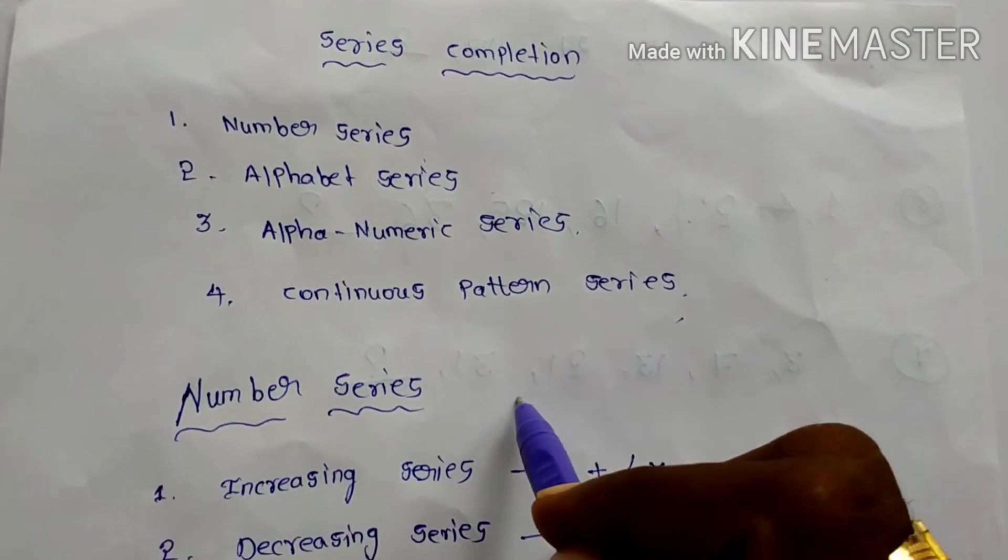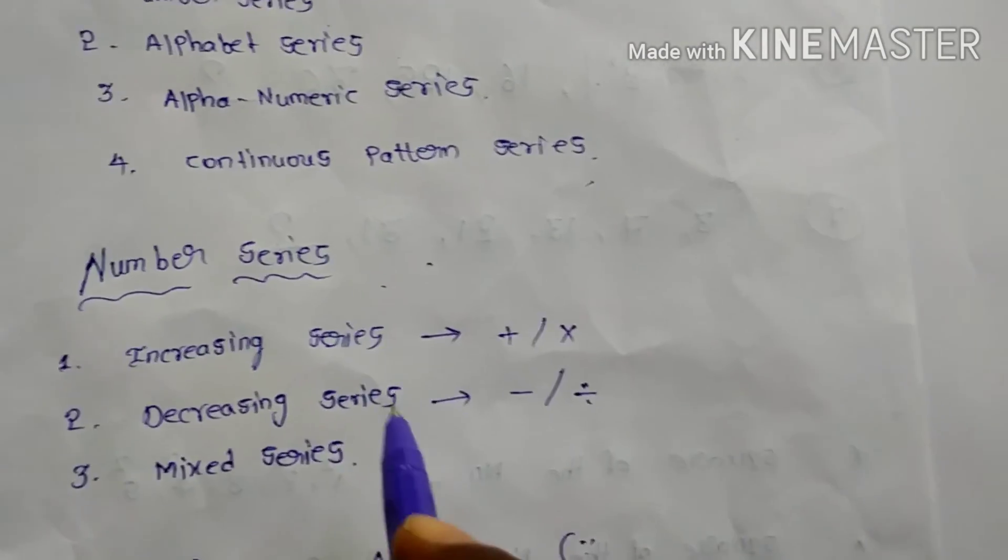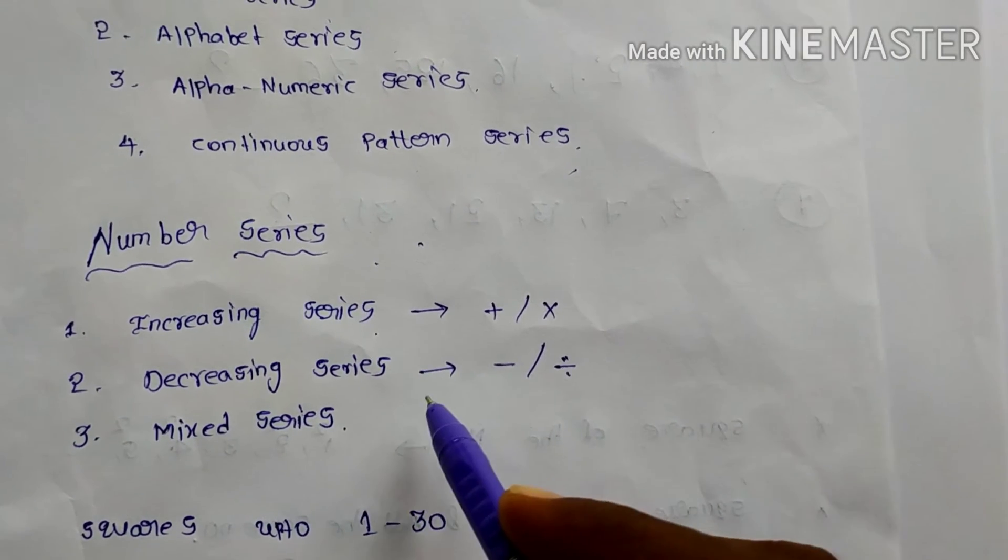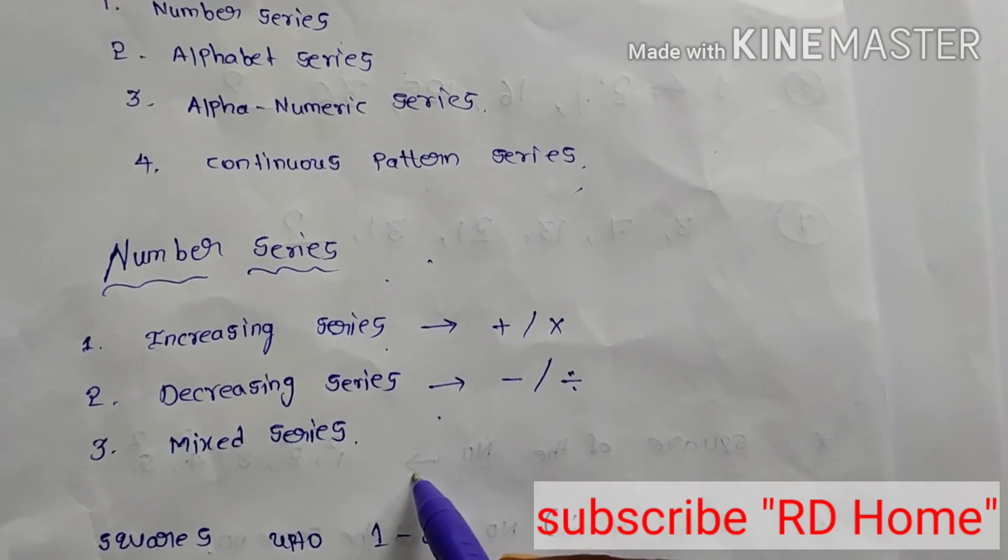First I will discuss Number Series. Number Series is mainly classified into three types. One is Increasing Series, Decreasing Series, Mixed Series.